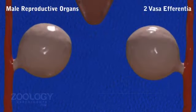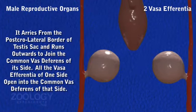Vasa afferentia: It arises from the posterior lateral border of the testis sacs and runs outward to join the common vasa deferentia of its side. All the vasa afferentia of one side open into the common vasa deferentia of that side.